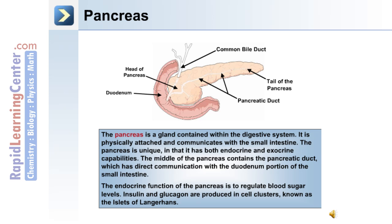Blood sugar levels in the body are regulated by the pancreas. The pancreas is made up of a head and tail connected through the pancreatic duct, situated adjacent to the duodenum of the small intestine. The common bile duct from the liver and gallbladder passes through this region. The pancreas has both endocrine and exocrine capabilities, and the pancreatic duct communicates directly with the duodenum. Its endocrine function is to regulate blood sugar levels.